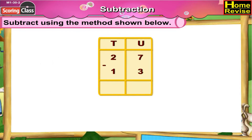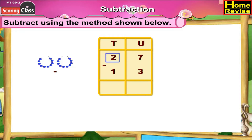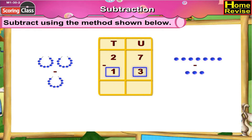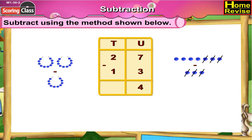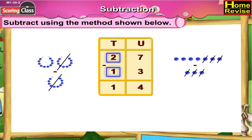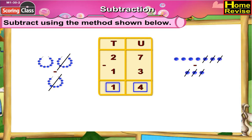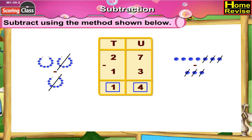27 minus 13. Again we will arrange them under tens and units. So it is 2 tens 7 units minus 1 ten 3 units. Units column: 7 minus 3 is 4. Tens column: 2 minus 1 is 1. So it is 1 ten 4 units. 27 minus 13 is 14.